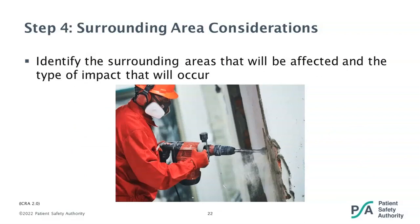Step four is also brand new to the updated tool and takes into consideration the surrounding areas and how they will be affected. The best example to demonstrate the importance of this is if you have an extensive project requiring jackhammering the floor — you can think of every possible risk for the direct area, but you're still going to have a major problem if you don't consider that the jackhammering is taking place on the floor above an operating room. In a less drastic example more specific to infection control, we need to be aware of the ventilation in the direct care area and how it's connected to surrounding areas. The HVAC system may need to be contained to ensure organisms aren't being circulated through ventilation to other areas.